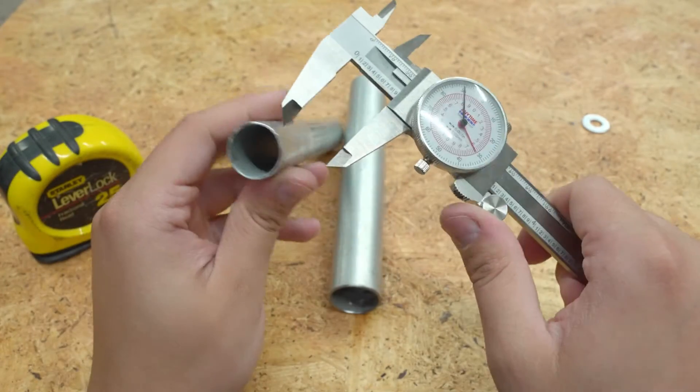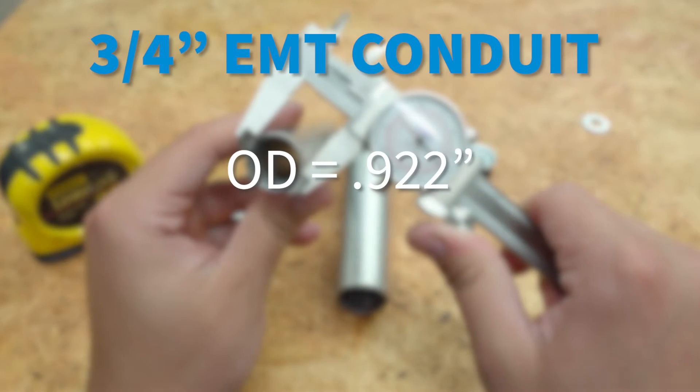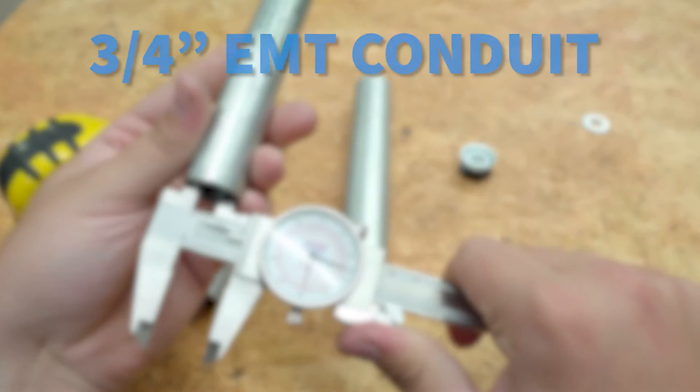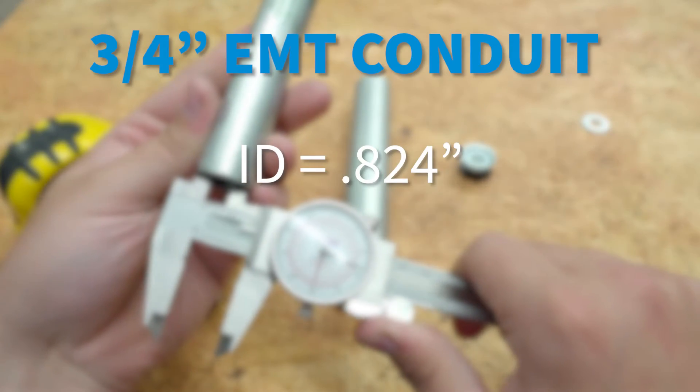Three-quarter inch EMT conduit has an outside diameter of 0.922 inches and an inside diameter of 0.824 inches.